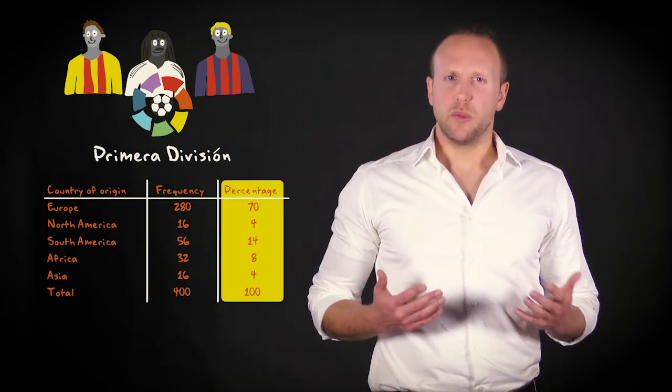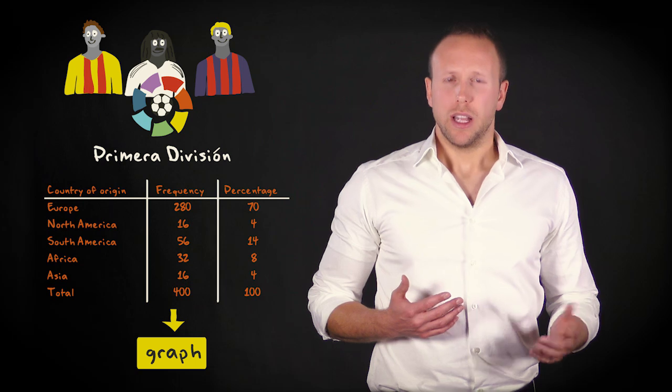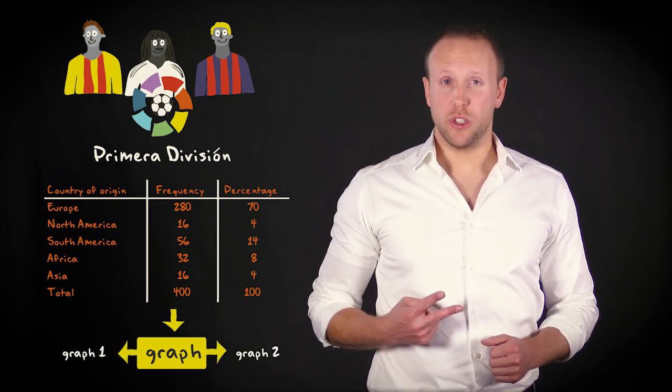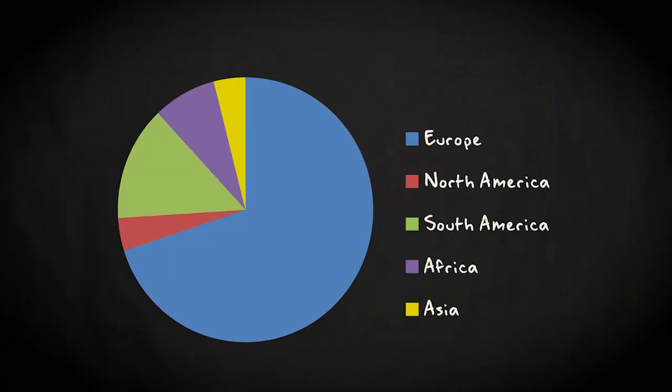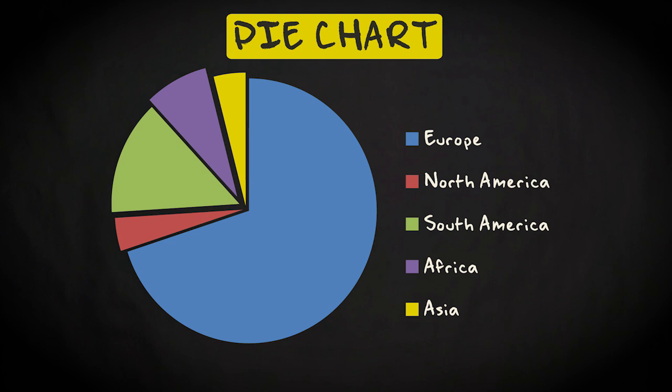You might want to present these results by means of a graph. Let me show you two possible ways in which you could do that. What you see here is a pie chart. The categories of the variable you would like to summarize are displayed by means of slices of a pie. In a pie chart, the surface of the slices represents the percentages of observations in each category.